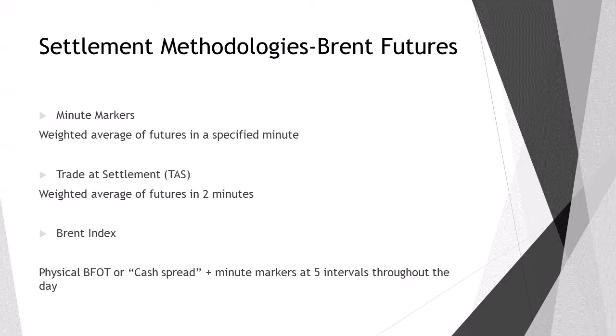Finally, we have the Brent Index, which is used to price the final futures price for a given month. This will occur at the end of the month — for instance, October futures will price on the 31st of August, as the futures trade two months ahead. On this day, the Brent Index reflects the actual physical price of North Sea crude oil, because ultimately Brent futures are a benchmark using North Sea oil. Physical BFOET — which references Brent, Forties, Oseberg, Ekofisk, and Troll — are the streams that make up the Brent Index. They take the average prices of the traded physical plus the minute markers of the futures at five intervals throughout the day and use this to determine a weighted average price, which will then be the final price for Brent Futures.